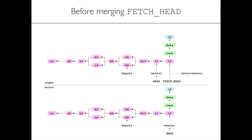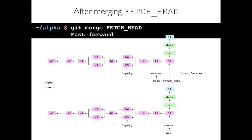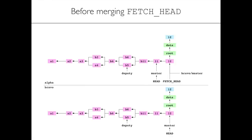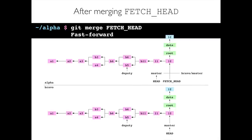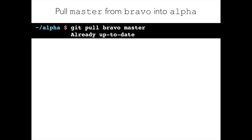Now let's merge FETCH_HEAD. We do git merge FETCH_HEAD and a fast-forward happens. Before the merge, master on alpha was pointing at 11 and FETCH_HEAD at 12. After git merge FETCH_HEAD, master now points at 12 — a familiar fast-forward merge. A pull is just a fetch followed by a merge of FETCH_HEAD, which we've just done manually.